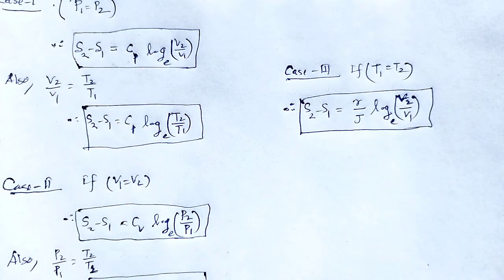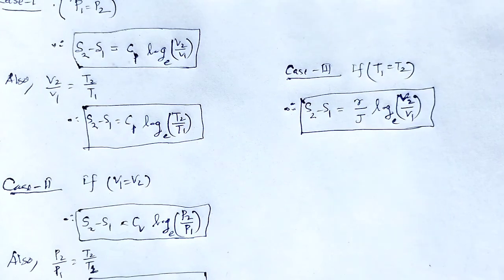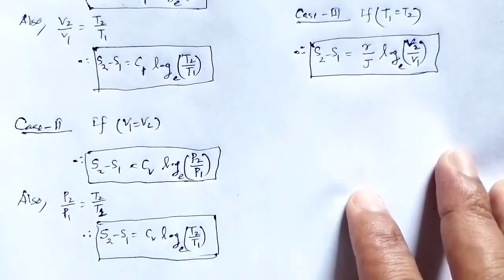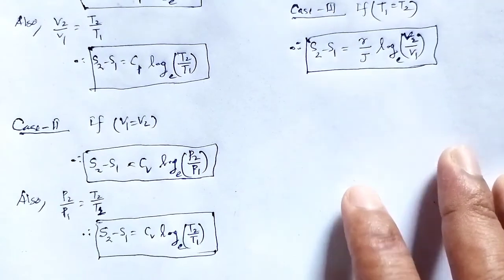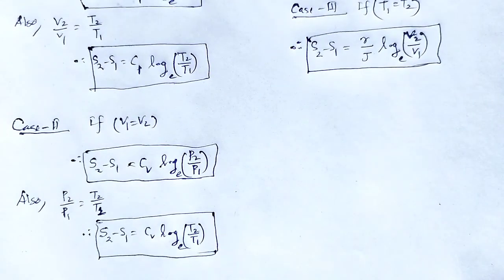With this informative session, we understood the entropy of a perfect gas — starting with 1 gram of gas at temperature T, deriving the expression, simplifying using Cp minus Cv, and obtaining the entropy equations for constant pressure, constant volume, and constant temperature cases. Thank you.